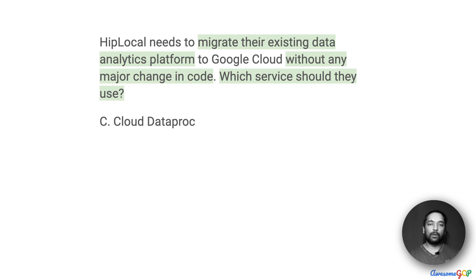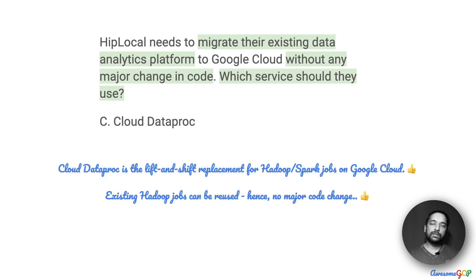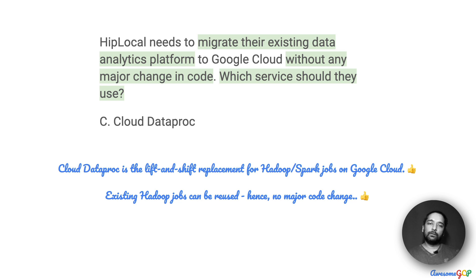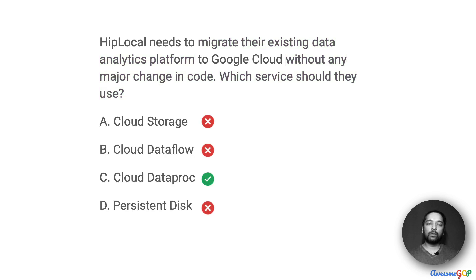Option C suggests Cloud Dataproc. We know that when we want to shift from on-prem Hadoop or Spark to Google Cloud, Dataproc is the option when you do not want to have any changes in code. So whatever jobs we are running on-prem, we can reuse the same thing on Google Cloud. Therefore, option C — Cloud Dataproc — would be the right solution in this case, when you want to do a lift and shift migration of Hadoop from on-prem to Google Cloud.